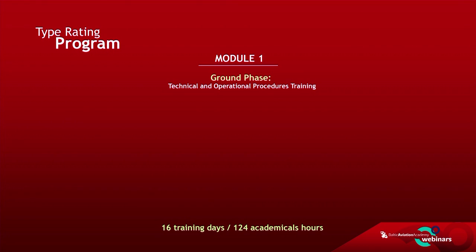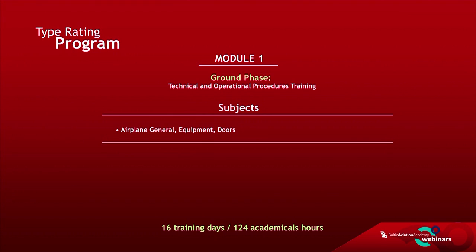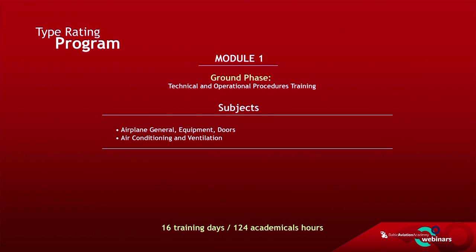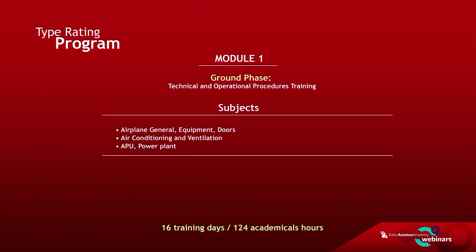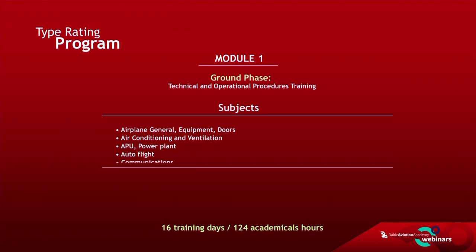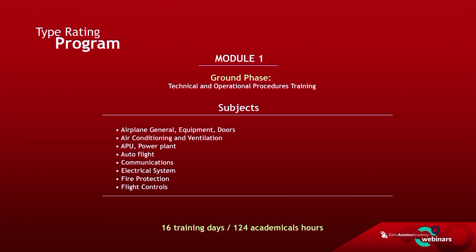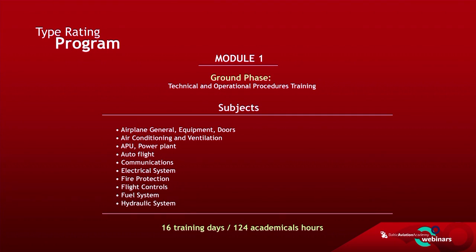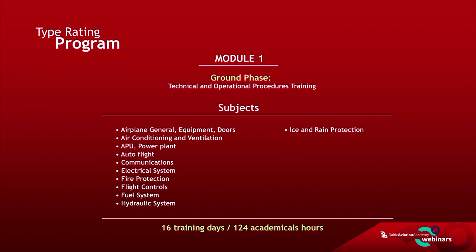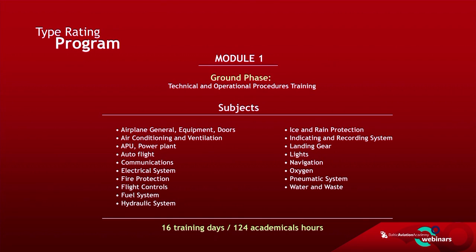During the ground training you will study subjects such as: airplane general, equipment and doors, air conditioning and ventilation, APU and power plant, auto flight, communications, electrical system, fire protection, flight controls, fuel system, hydraulic system, ice and rain protection, indicating and recording system, landing gear, lights, navigation, oxygen, pneumatic system, water and waste, and maintenance system.